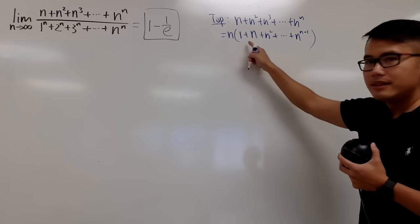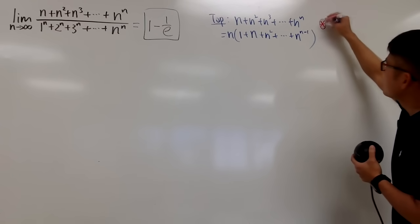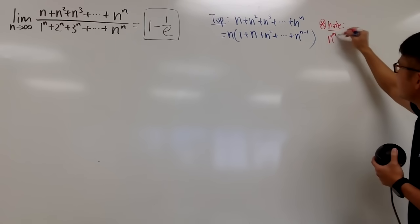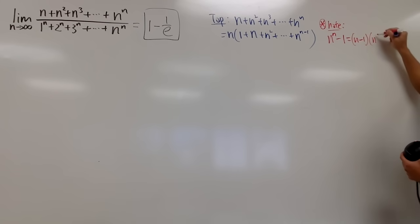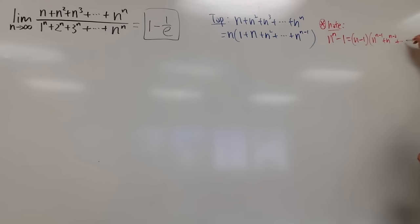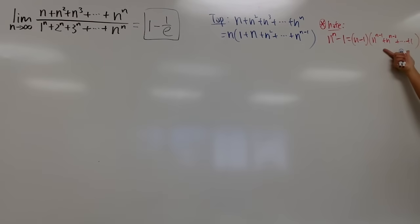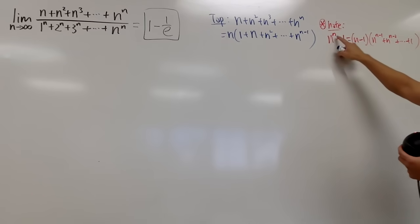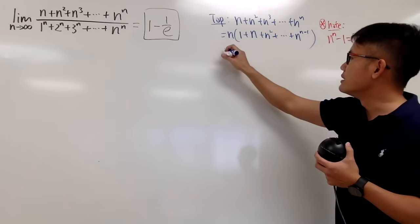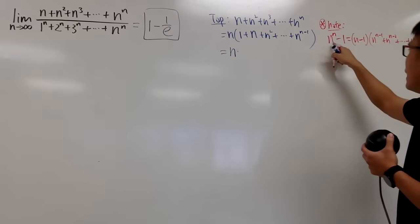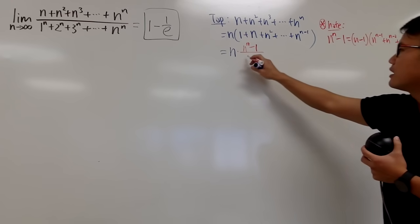In fact, this right here has a nice expression. When we are factoring n to the n minus 1, this is in fact equal to (n minus 1) times (n to the n minus 1 plus n to the n minus 2) and so on up to 1. As we can see, this right here is exactly this part. Therefore, this is nothing but just n to the nth power minus 1, divided by n minus 1. So we can actually say this is equal to n times n to the n minus 1 over n minus 1, which will be on the numerator.